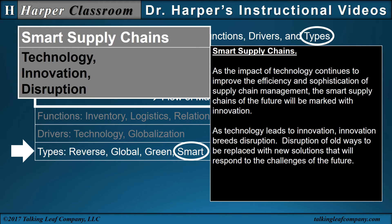Smart supply chains. As the impact of technology continues to improve the efficiency and sophistication of supply chain management, the smart supply chains of the future will be marked with innovation. As technology leads to innovation, innovation breeds disruption — disruption of old ways to be replaced with new solutions that will respond to the challenges of the future.